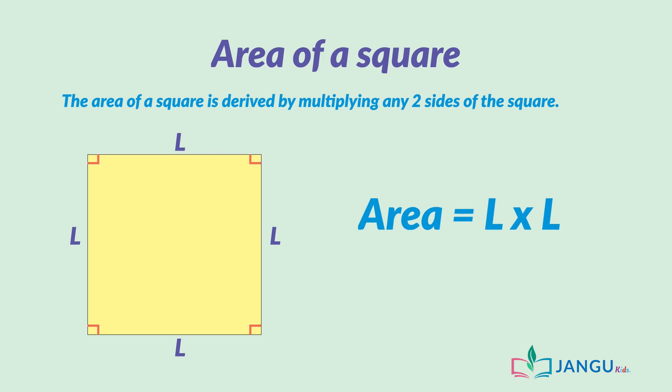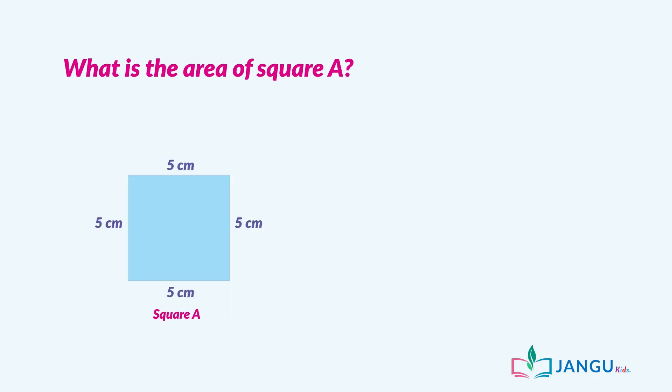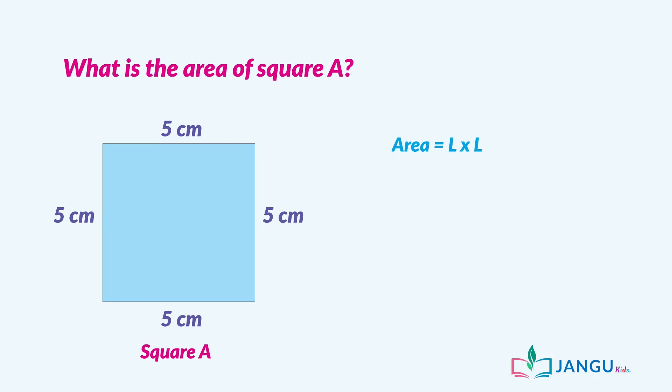Let's try some examples. What is the area of square A? Area is equal to length times length or length squared. The area of square A is equal to 5 centimeters times 5 centimeters, which is equal to 25 square centimeters.